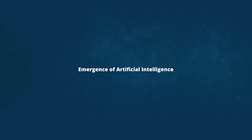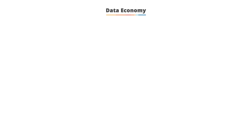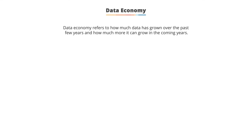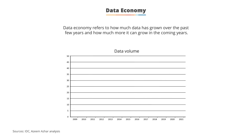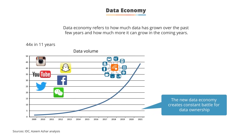Let's understand how the field of artificial intelligence emerged. The data economy is one of the factors behind the emergence of AI — it refers to how much data has grown over the past few years and how much more it can grow in coming years. Looking at this graph, you can clearly see that since 2009, data volume has increased by 44 times.